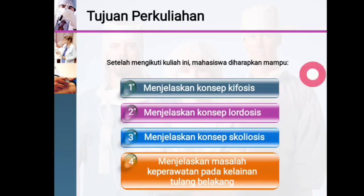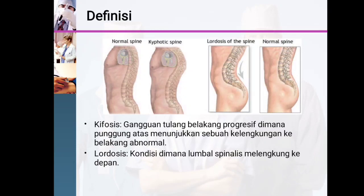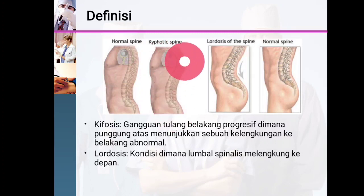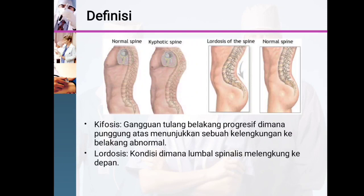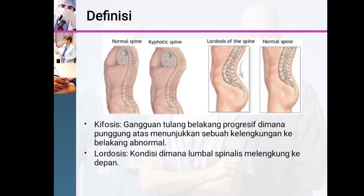Let's start with the definition of kyphosis and lordosis. Kyphosis is a progressive spinal deformity where the back of a patient has a backward curvature. Here in the picture you can see a normal spine, and on the right this picture shows that the upper part of the vertebrae — the thoracic vertebrae — has an abnormal curvature that curves more to the backward.